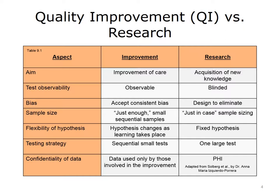It is important that a clear distinction is made regarding the use of data. When data are collected to improve care, the collection characteristics are different than when collected to advance research and expand our knowledge. When the aim is to improve care, you use observable data, accept that there is a consistent bias, and collect just enough data to make a decision in a small and sequential manner. When the aim is to acquire new knowledge, data are better collected blinded — when neither the researcher nor the subject are aware of the test being performed — and you attempt to eliminate biases and collect a wide variety of data points for a sample size determined through a power calculation.